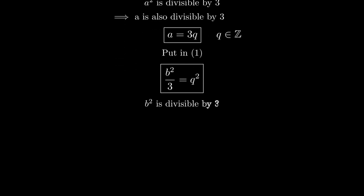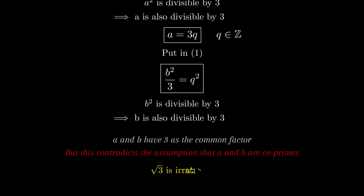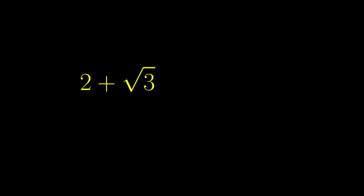Since b² is divisible by 3, this implies b is also divisible by 3. Thus both a and b have 3 as a common factor. But this contradicts the assumption that a and b are coprime, meaning they have no common factor other than 1. This contradiction has arisen because of our incorrect assumption. Hence we conclude that root of 3 is irrational.